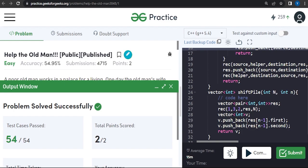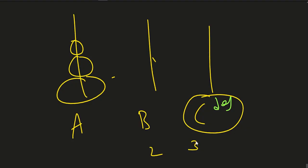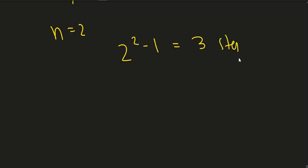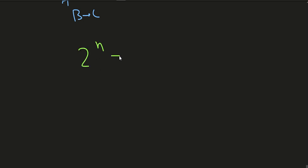Our code was able to pass all the test cases. If you observe the number of steps for every case: for n=2 we took 2² - 1 = 3 steps (A to B, A to C, B to C). So basically, for a given n, the number of steps is 2^n - 1. That will be the time complexity for this particular approach. Thank you for watching this video.